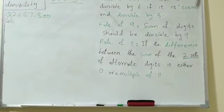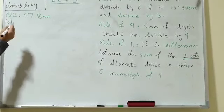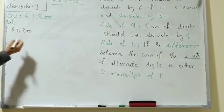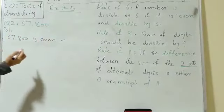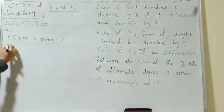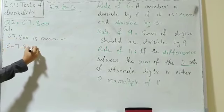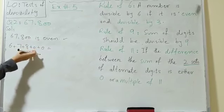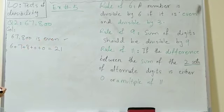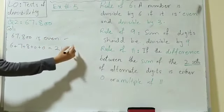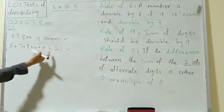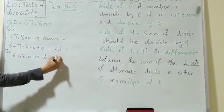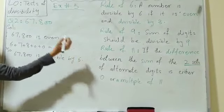Question number 2: the number is 67,800. Let's check its divisibility by 6. The digit at the units place is 0, so the number is even — first condition fulfilled. For divisibility by 3, the sum of the digits is 6 plus 7 plus 8 equals 21, plus two zeros equals 21. Since 21 is divisible by 3, both conditions are fulfilled, so 67,800 is divisible by 6.